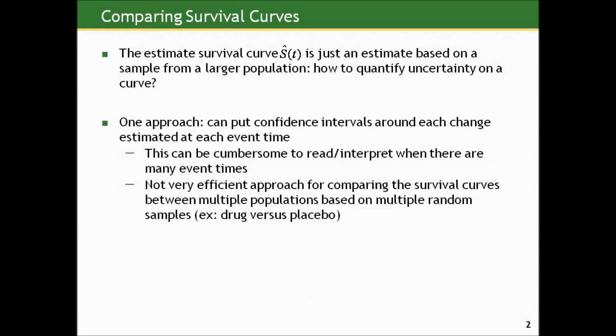These are just proportions, and we can slap confidence intervals on them. There's a method for doing that which is similar to the method we used for single proportions. But this can be cumbersome to read and interpret when there are many event times, and it's also not a very efficient approach for comparing the survival curves between multiple populations based on multiple random samples.